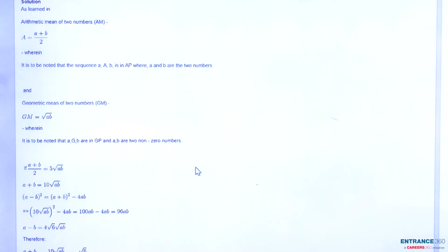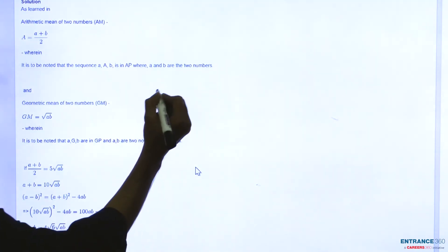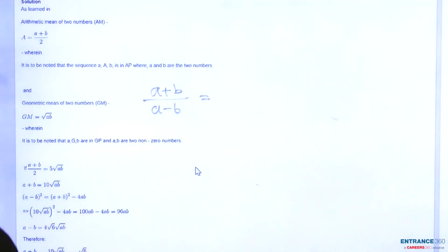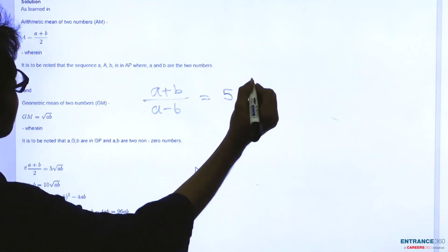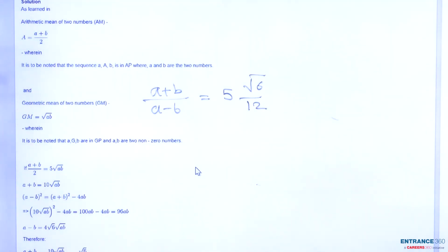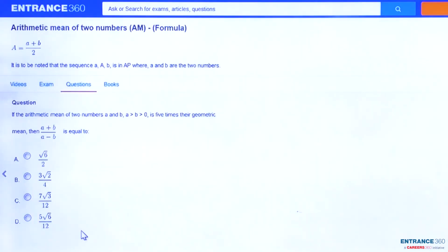So after solving you will get the answer: (A+B)/(A-B) = 5√6/12. Let's check the option. We get option D as our final answer, which is the correct one.